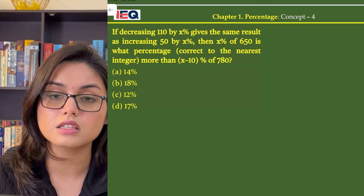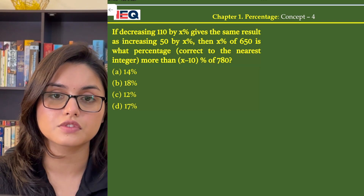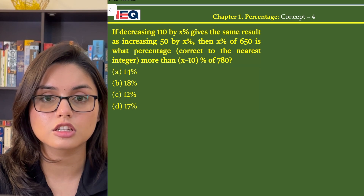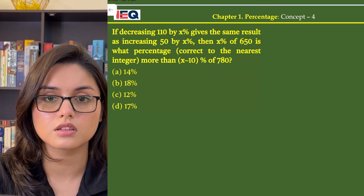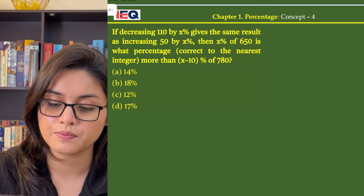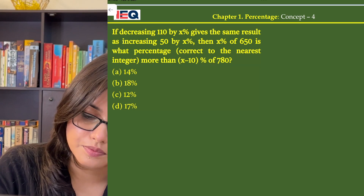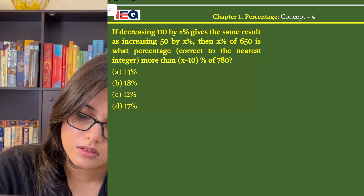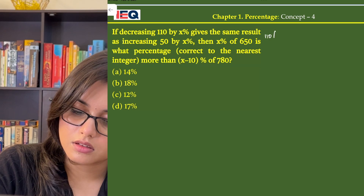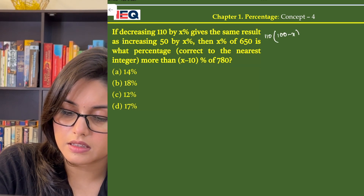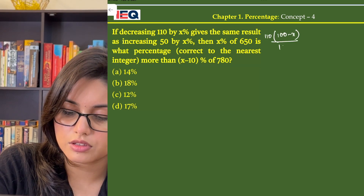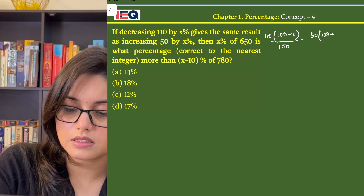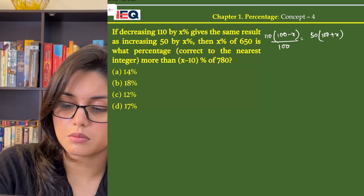Considering that 110 and 50 are 100% of themselves, they have been decreased and increased by x% respectively. So that gives us: 110 × (100 - x)/100 = 50 × (100 + x)/100.